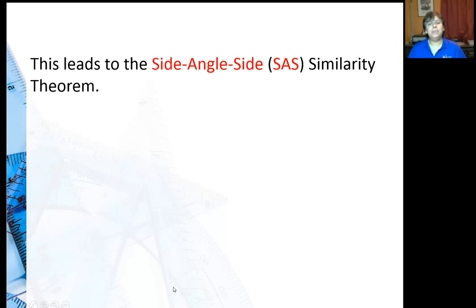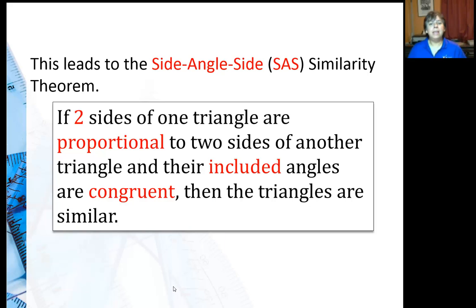So this leads to the Side-Angle-Side similarity theorem, or SAS. It says: if two sides of one triangle are proportional to two sides of another triangle, and their included angles are congruent, then the triangles are similar.